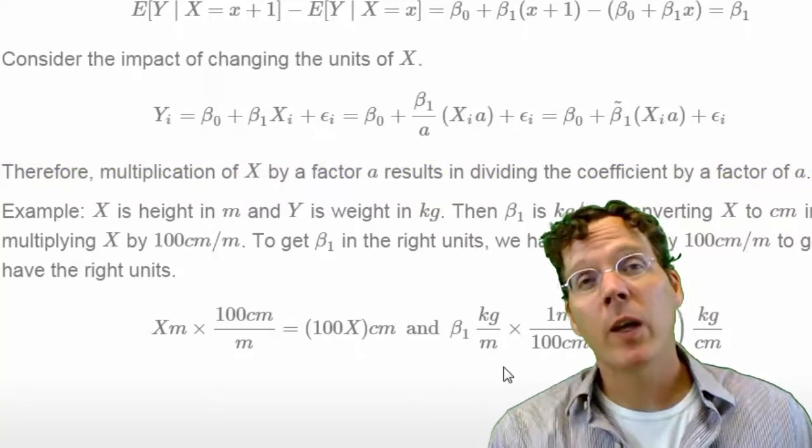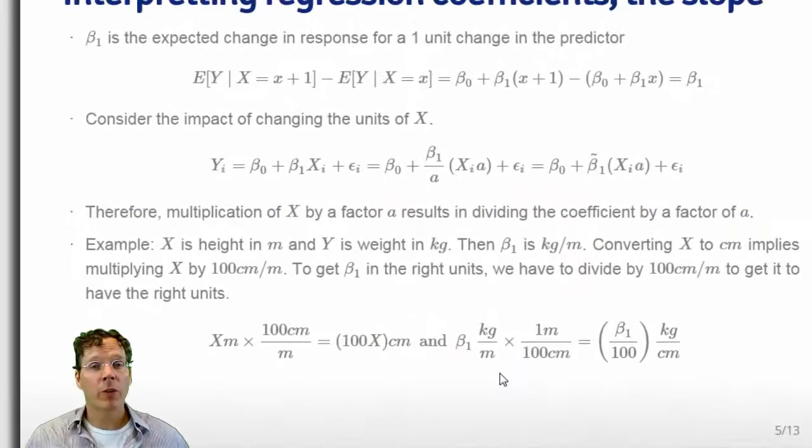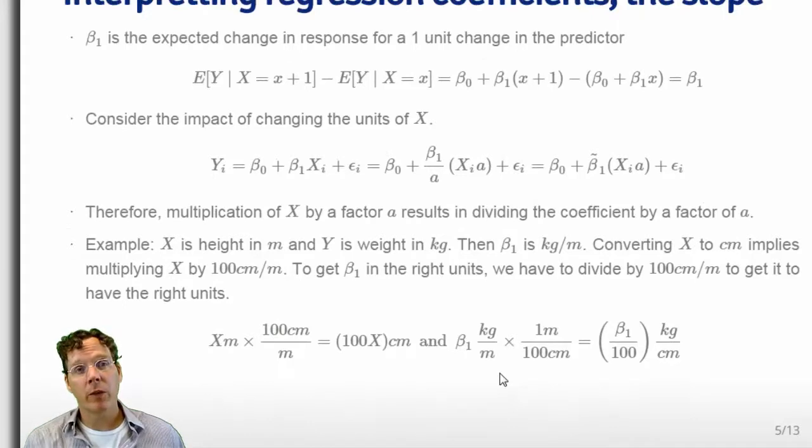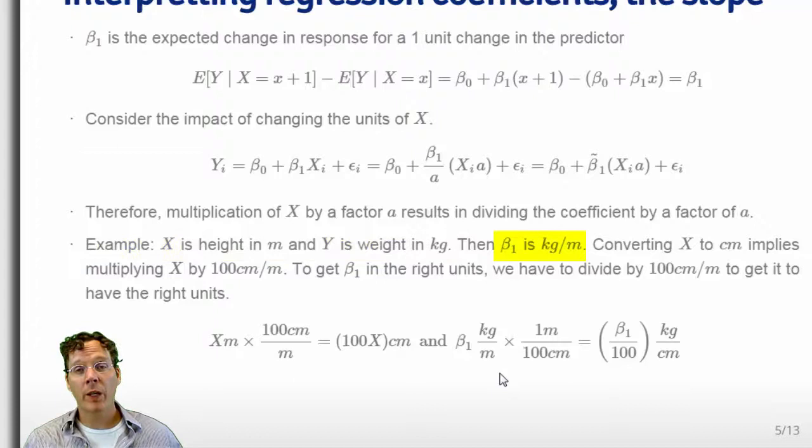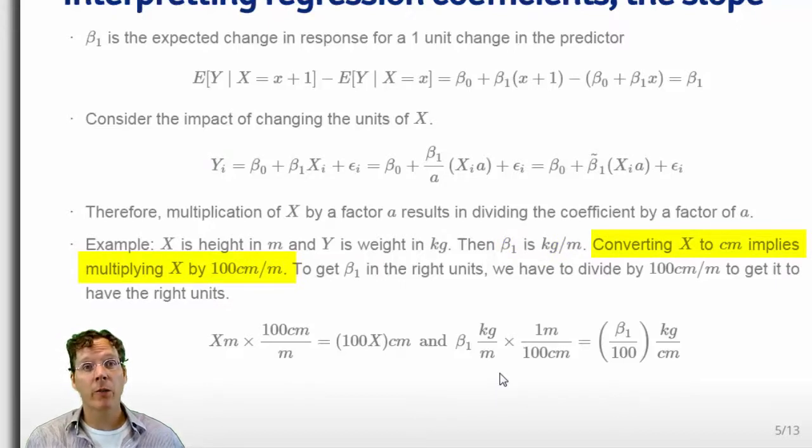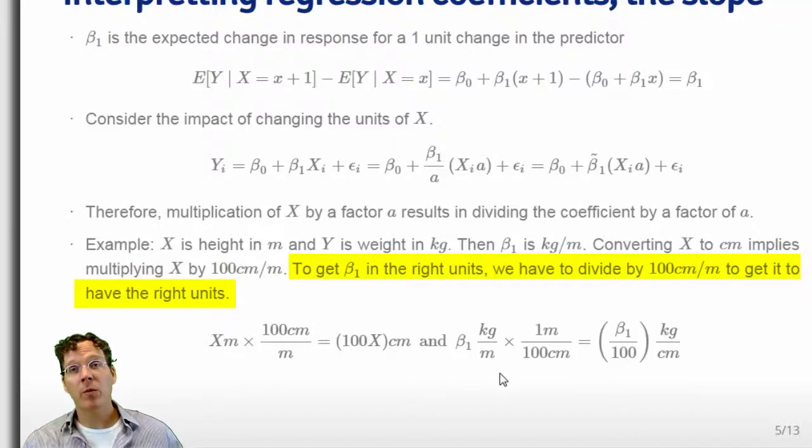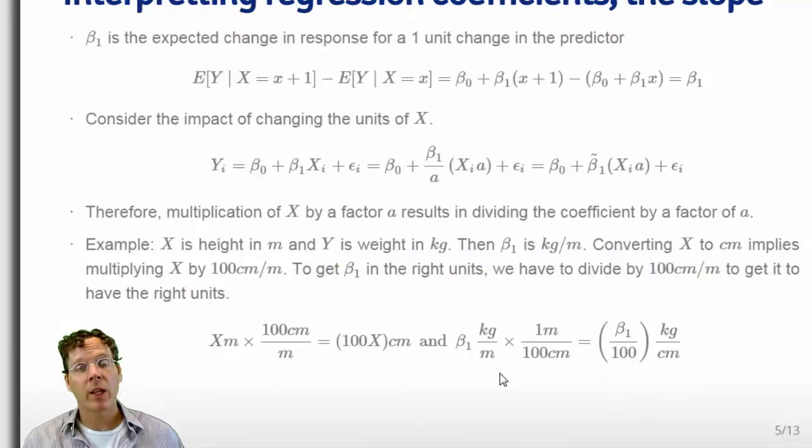Let me give you a simple example to hopefully solidify these points. Imagine if X is height measured in meters and Y is weight measured in kilograms, a pretty simple regression problem. Then beta one is interpreted in kilograms per meter. Converting X to centimeters implies multiplying X by 100 centimeters per meter. To get beta one in the right units, now we simply divide it by 100 centimeters per meter to get it back in the right scale. And here I just wrote a little equation to remind us.